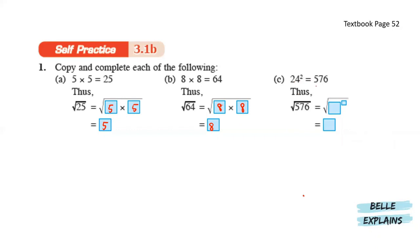24 squared equals 576. Thus, the square root of 576 is 24 squared. So square root is actually a power of half. So when we open this bracket, that will give us 24 to the power of 1. There is no square and there is no square root, so that means 24.